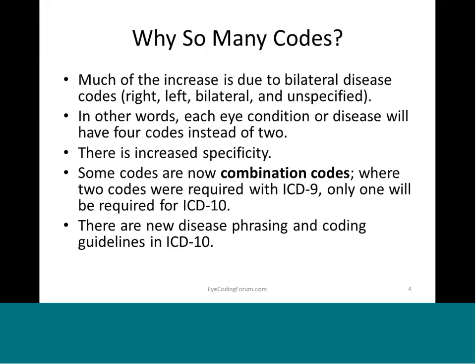Much of the increase in codes is due to bilateral disease codes, meaning we now have a separate code for right, left, bilateral, and unspecified. This applies to anything you have two of, such as eyes.